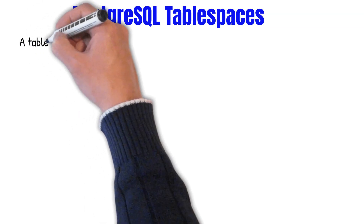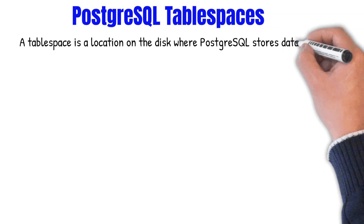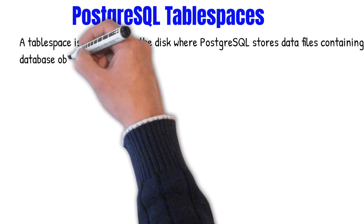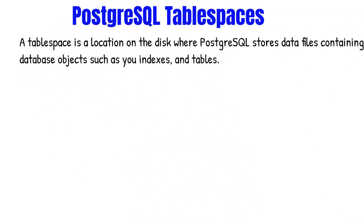At the end of this lecture, you should have an understanding of tablespaces in PostgreSQL. A tablespace is the location on the disk where PostgreSQL stores data files containing database objects such as your indexes and tables. PostgreSQL uses a tablespace to map a logical name to a physical location on the disk. So if you check the disk location of your tablespace, you should see some files in the directory.